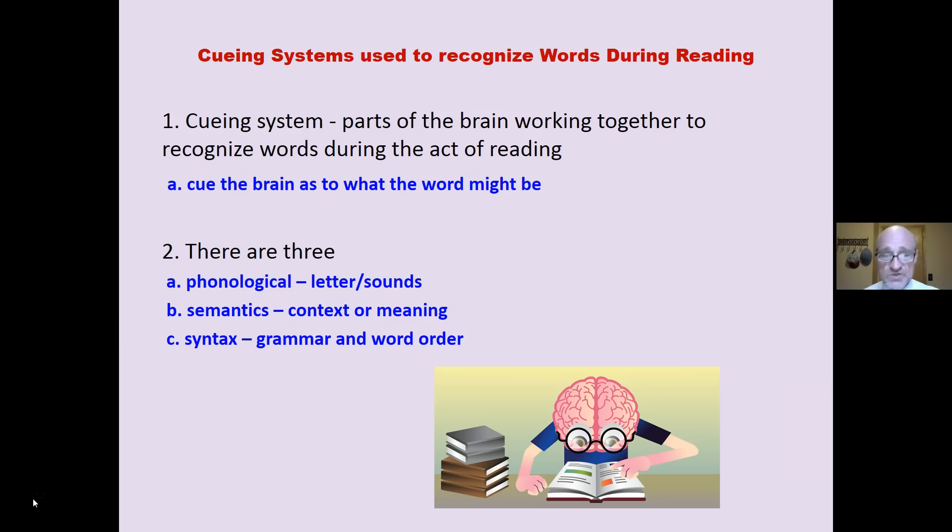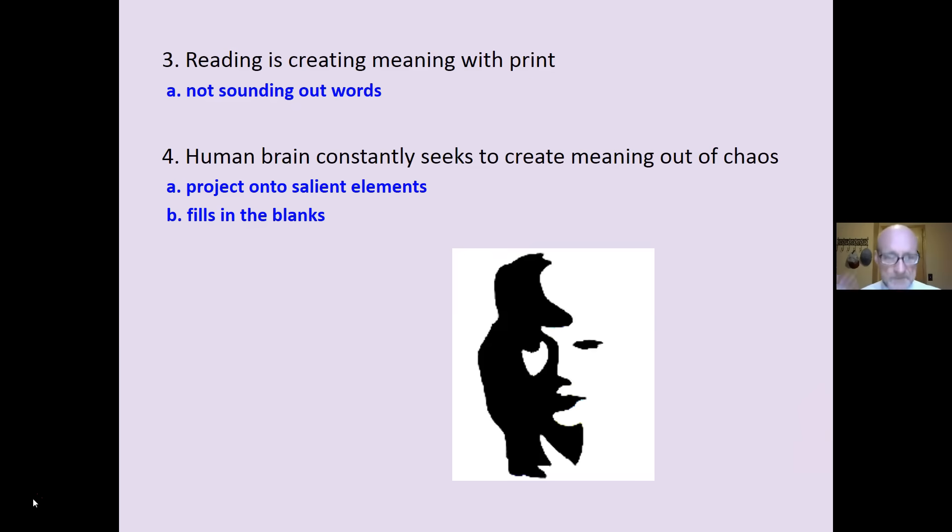We use those, yes, some of those, but we use mostly semantics, the context or meaning to figure out what the next word might be. As well, syntax, which is grammar and word order. These are all cueing systems, parts of the brain working together to figure out what that word is or might be.